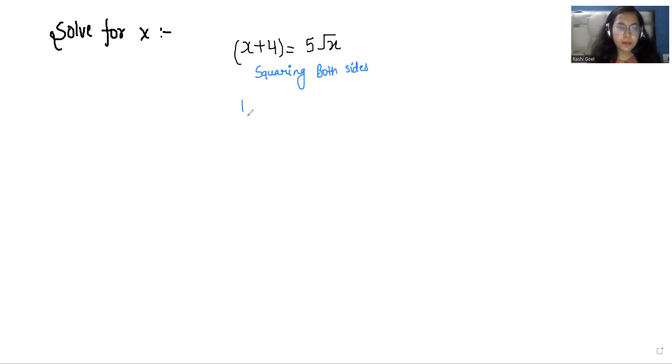So here (x+4)² equals (5√x)². Here we can use our famous identity that is (a+b)² = a² + 2ab + b².